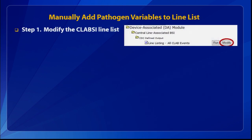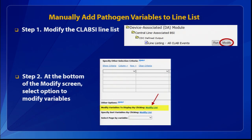Step one: find the CLABSI line list under the device-associated module folder and click Modify. Step two: at the very bottom of the modify screen, there is a link you can click to modify the variables displayed on the line list.